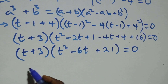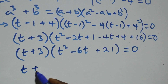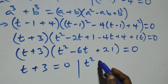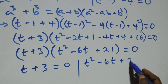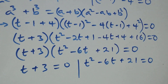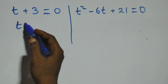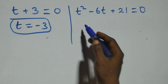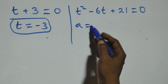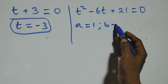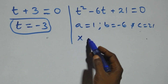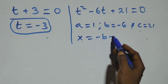Here we have two possible cases. First: t + 3 = 0, giving t = −3, which is a real solution. And here we have a quadratic equation where a = 1, b = −6, and c = 21.